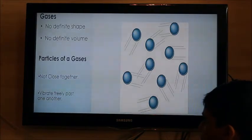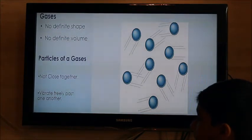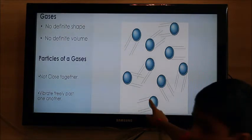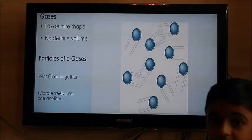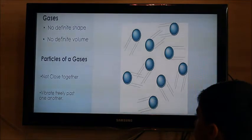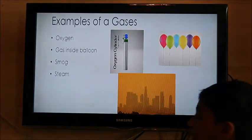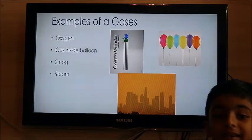Gases: no definite shape, no definite volume. Particles of a gas are not close together, vibrate freely past one another. That's how they go at speed and this is a type. Examples of gases: oxygen, gas inside the balloon, smoke and steam.